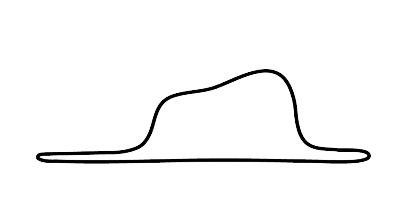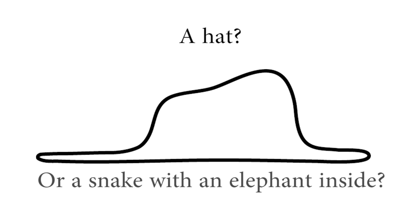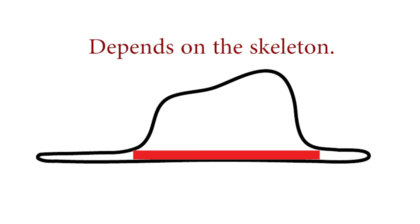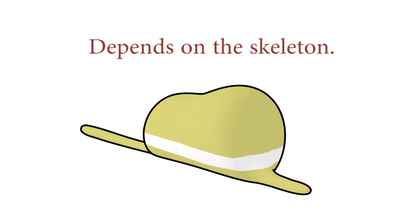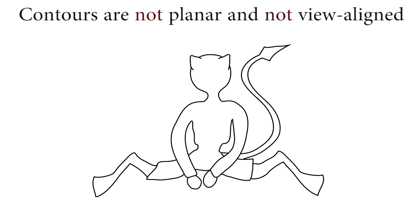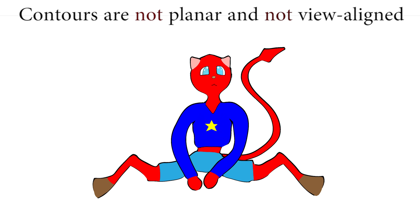2D contour drawings allow ambiguities in 3D interpretation. These are resolved by providing a 3D skeleton. Articulated character drawings also have inter-part occlusions, varying contour depth, and foreshortening.